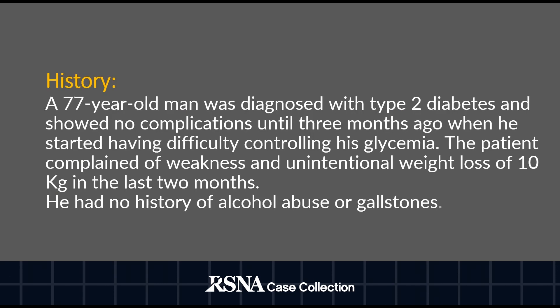A 77-year-old man was diagnosed with type 2 diabetes and showed no complications until three months ago, when he started having difficulty controlling his glycemia. The patient complained of weakness and unintentional weight loss of 10 kilos in the last two months. He had no history of alcohol abuse or gallstones.